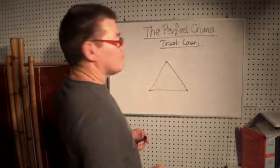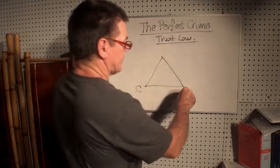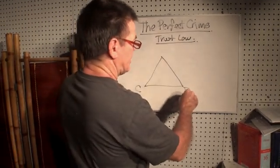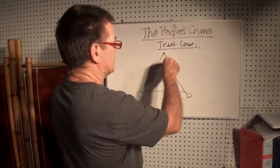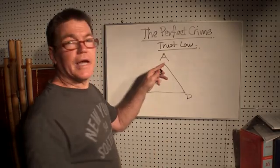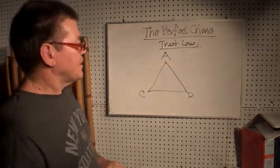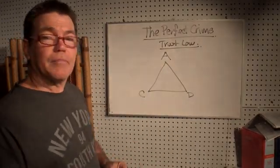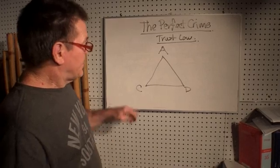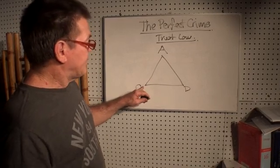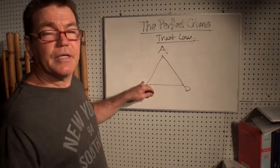Trust law has a creditor, a debtor, and an administrator — three elements. The creditor gives, or grants, the dominion.